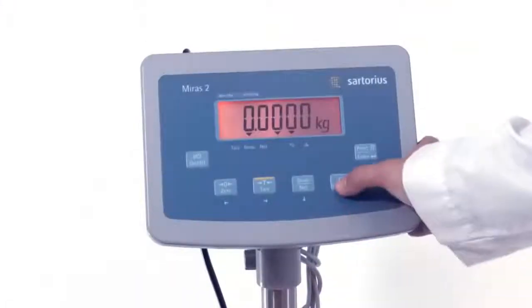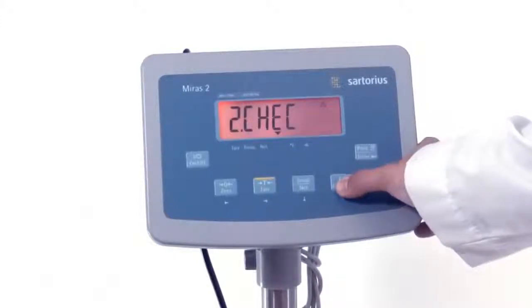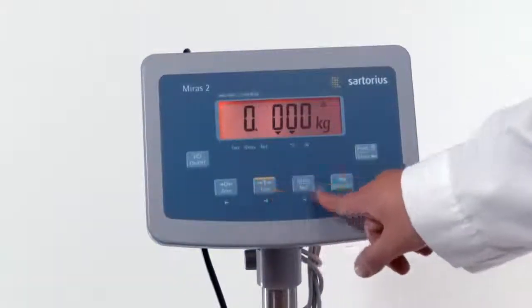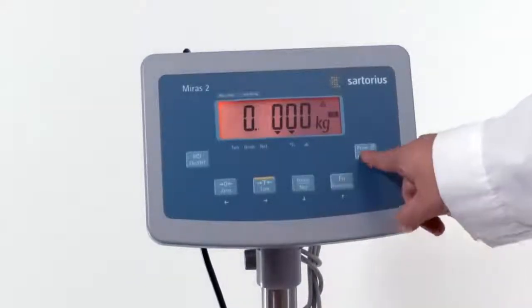For check weighing, setting lower and upper limits is simple. The display shows high, OK, and low for easy operator reference.